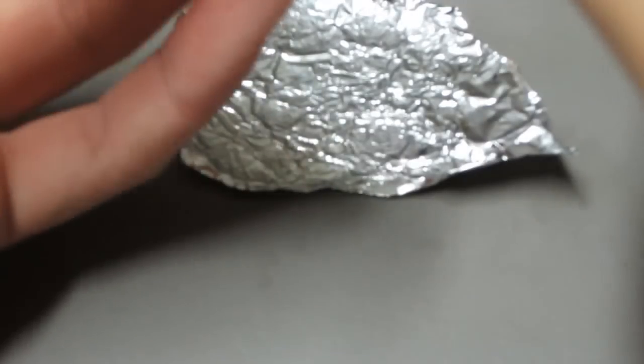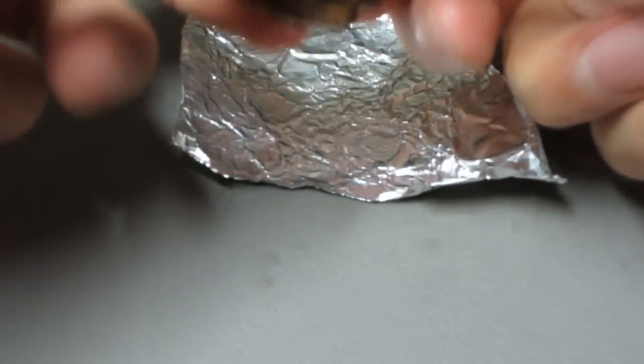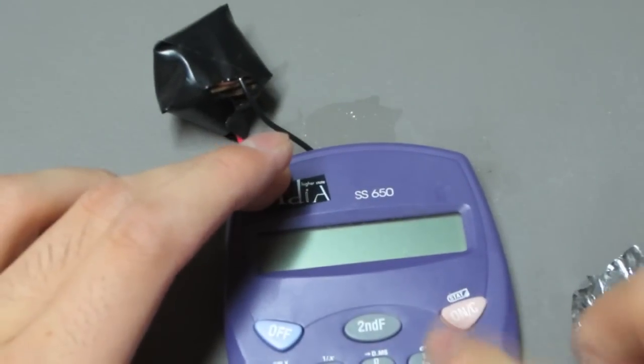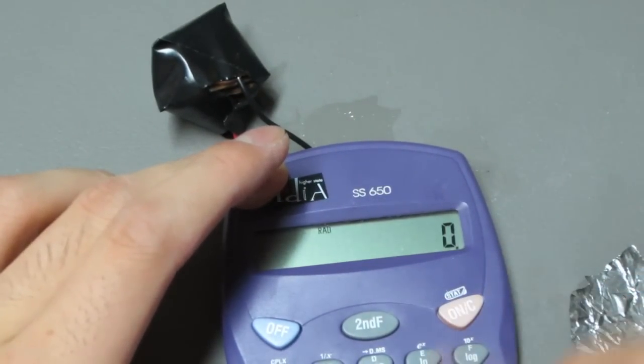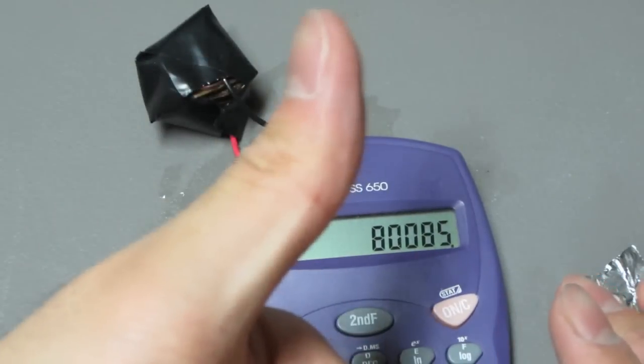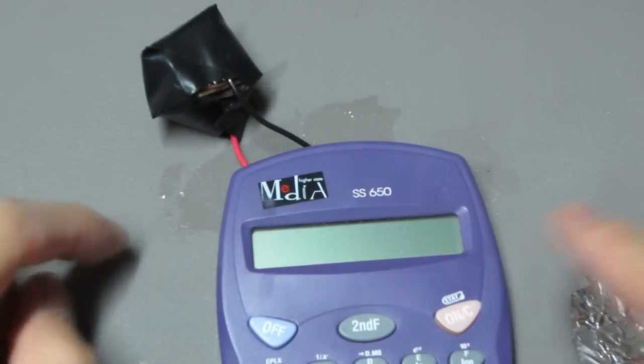Alright, after that I just took some electrical tape and taped it all together with some wires sticking out at the top and bottom as positive and negative. Now let the testing begin. Hooking up to a small cell powered calculator, as you can see you can easily power it on, but I decided to take a step further and see if I could power something even better than that.